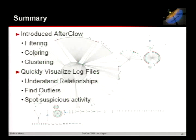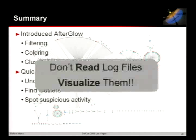So let's summarize. We looked at Afterglow — you can do filtering, coloring, and clustering if you get brave. I was able to show use cases: finding my port 100 SSH backdoor, finding Bogon address space, finding outliers, relationships among things, who is talking on the network, and people connecting from countries of concern. Suspicious activity, basically. Don't read log files — visualize them.